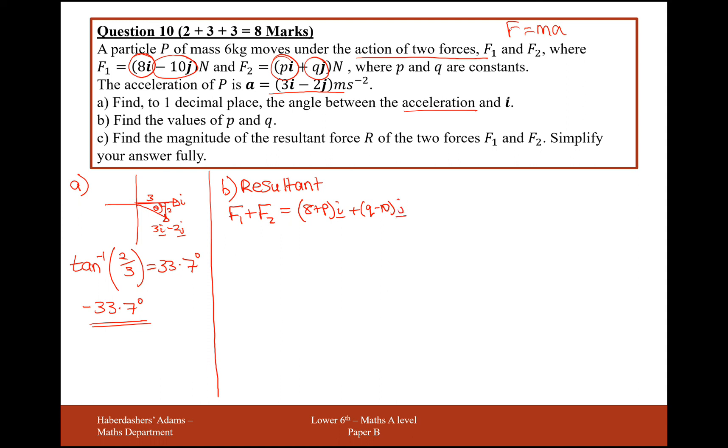Okay, now, so what we need now is to start to look at our F equals MA equation. Now, the F part is everything that we had from the resultant of those two forces. So for the left-hand side of this formula, 8 plus PI plus Q minus 10J is going to equal,